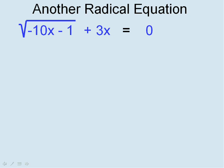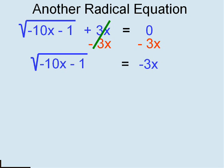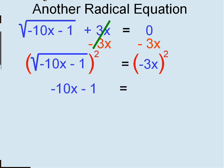Let's try a more difficult problem. This one does not have the radical by itself. What's keeping it from being by itself? The 3x. So let's subtract 3x from both sides to isolate the radical. Now we've isolated it. Don't forget — you're going to square both sides; that's a common mistake. Squaring and square rooting are inverses, so on the left side we have the same expression minus the radical. On the right side, recall that a negative times a negative is a positive, and we have 9x squared. This problem becomes quadratic because of the x squared.